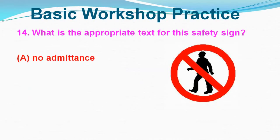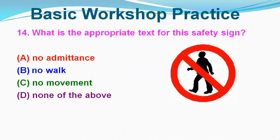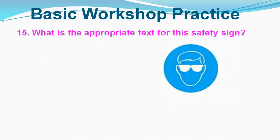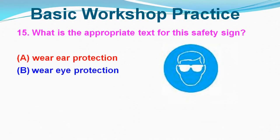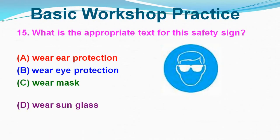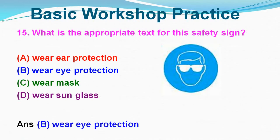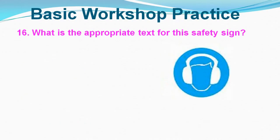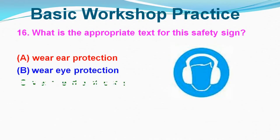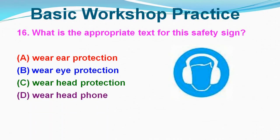Question No. 14: What is the appropriate text for this safety sign? Option A: No Admittance, Option B: No Walk, Option C: No Movement, Option D: None of the Above. Correct answer is Option A, No Admittance. Question No. 15: What is the appropriate text for the safety sign? Option A: Wear Air Protection, Option B: Wear Eye Protection, Option C: Wear Mask, Option D: Wear Sunglasses. Correct answer is Option B, Wear Eye Protection.